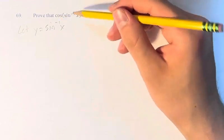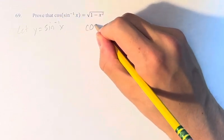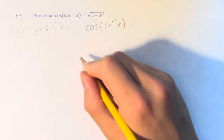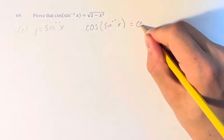Therefore, this is just cosine of y. Right, cosine of the inverse sine. By our rules, this is just y, so this is cosine of y.